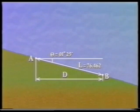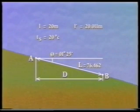For example, the surface distance along AB has been measured as 76.462 meters, and the angle of the slope was measured using a theodolite as 1 degree 25 minutes. The steel tape used had a nominal length of 20 meters and a standardized length of 20.011 meters at a temperature of 20 degrees C and a tension of 50 newtons.